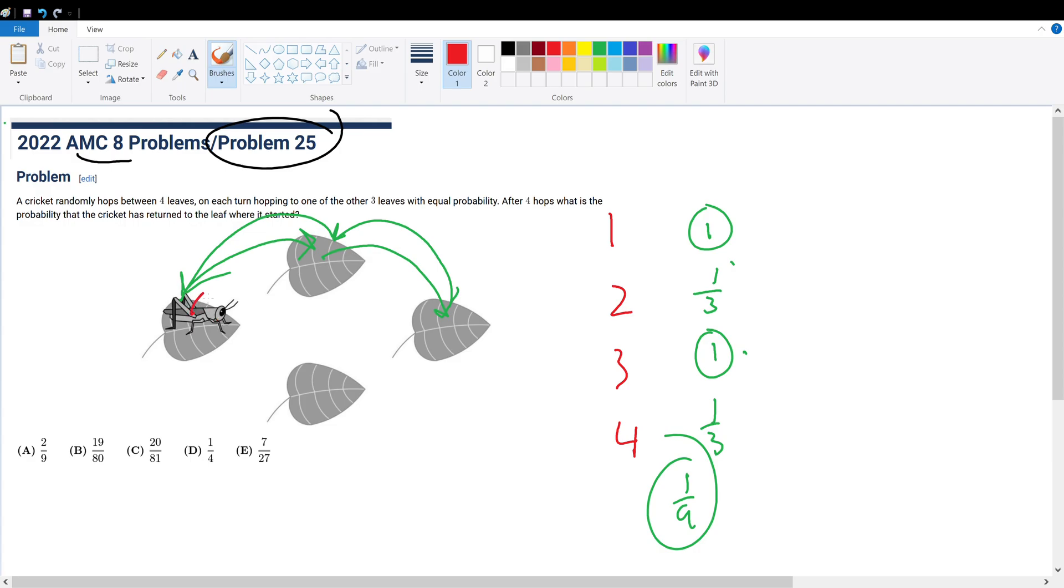So the cricket could also go here to this leaf and then come back, go to this leaf again, and then come back for a total of four hops. So what is the chance of this happening? Well, the first hop, it's always going to be one. The second hop, it's going to hop back to the original leaf. So that's one-third. The third hop, it's one. And the fourth hop, it has to hop back to its original leaf. So that's one-third.